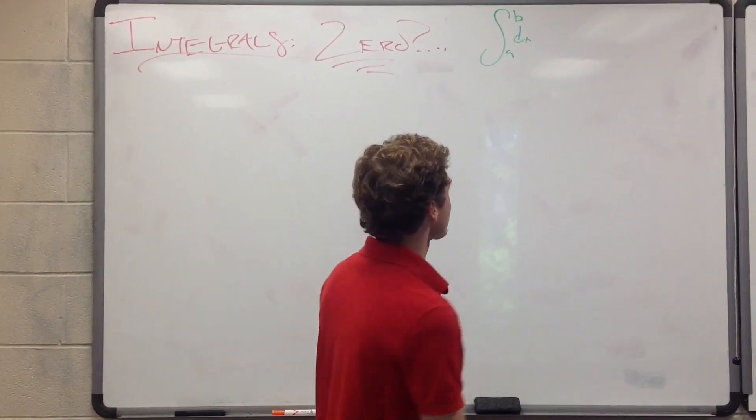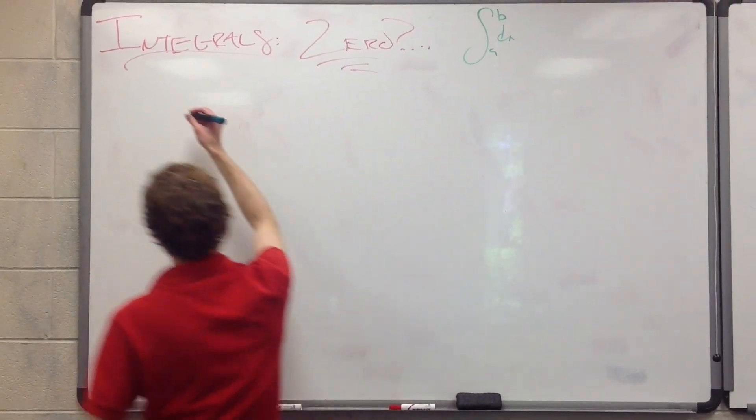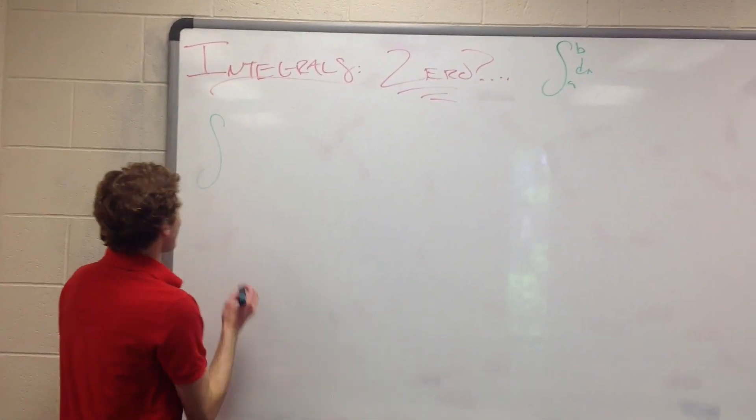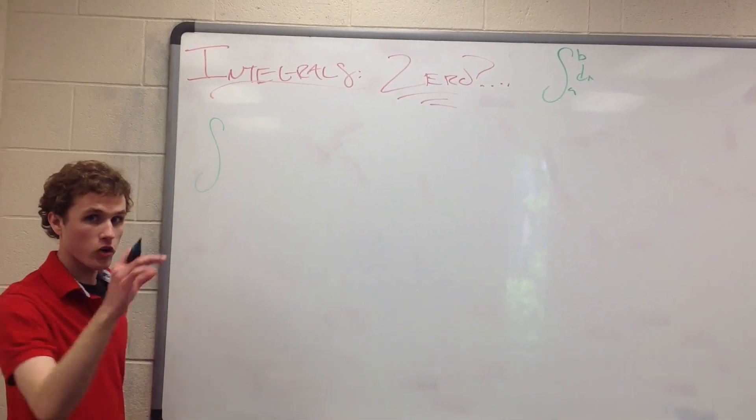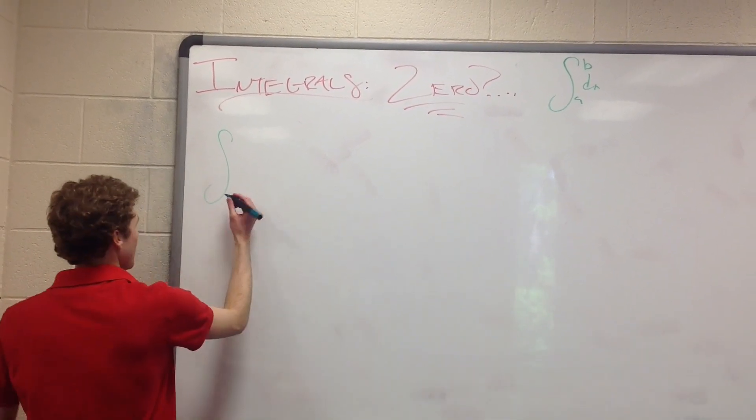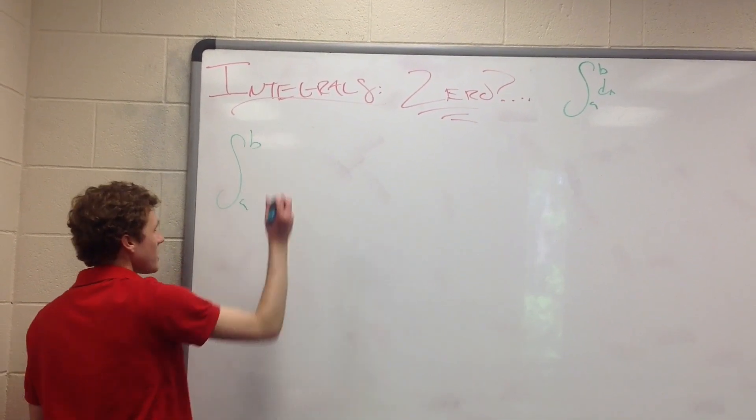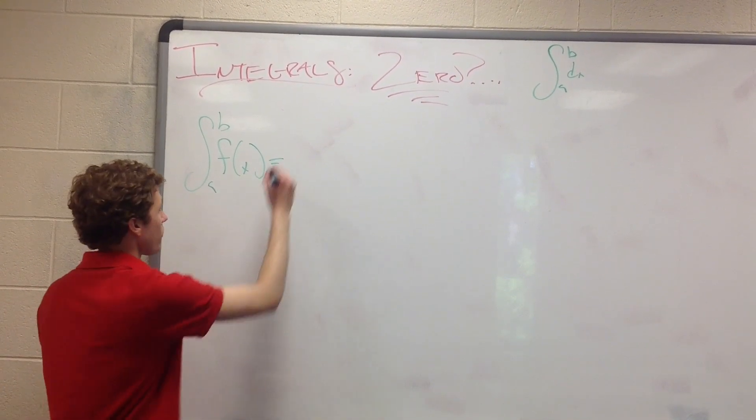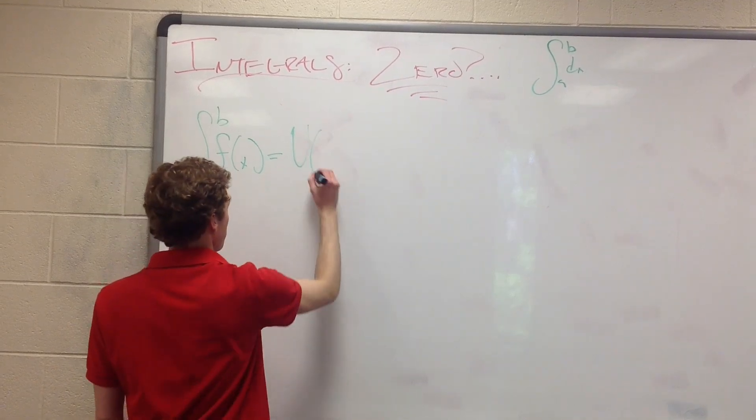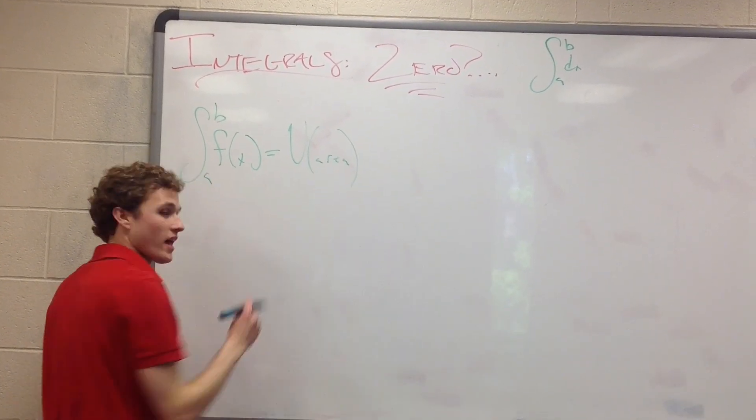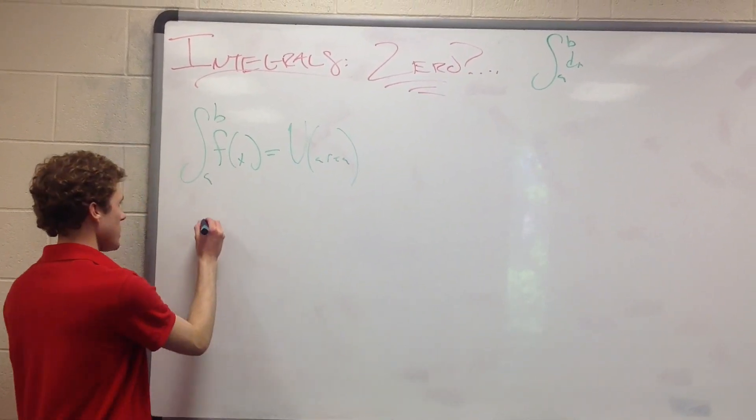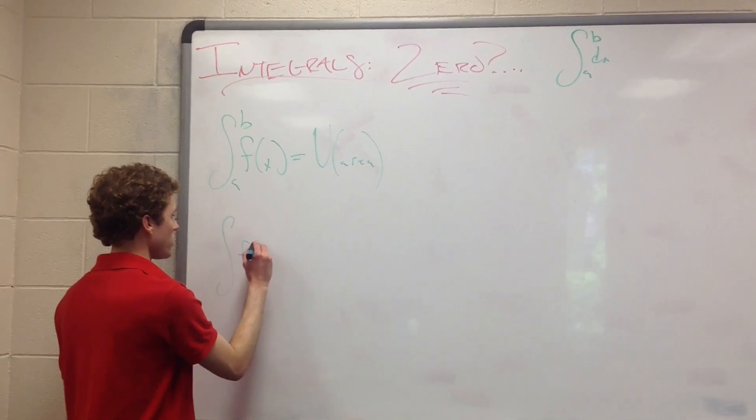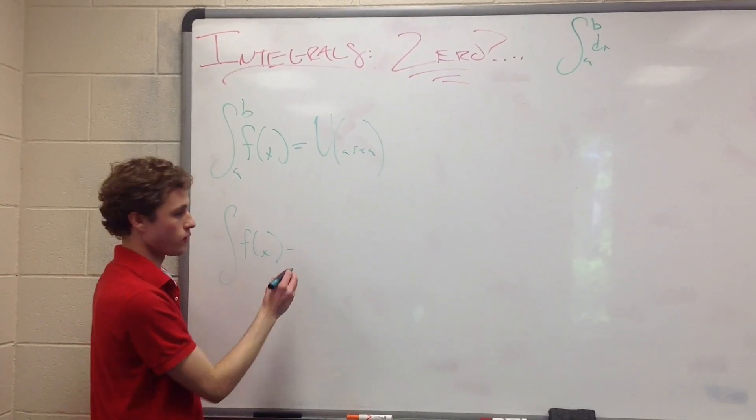A definite integral is an integral that takes a function over a certain interval, like A to B, right? And then you have a function inside and it spits out a value of area. That's what a definite integral is as opposed to an indefinite that takes a function and then spits out its antiderivative.